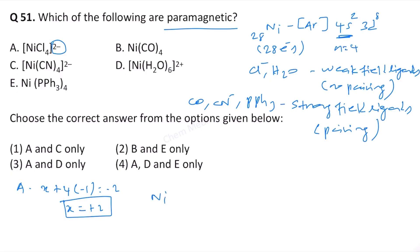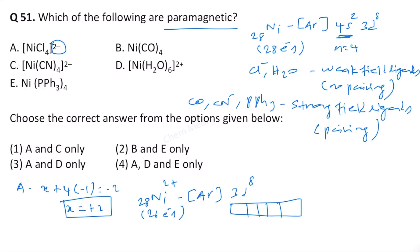For Ni²⁺ we have only 26 electrons — atomic number is 28 but because it is Ni²⁺ we have only 26 electrons. Therefore the configuration is argon and then 3d⁸. I am explaining this using valence bond theory.